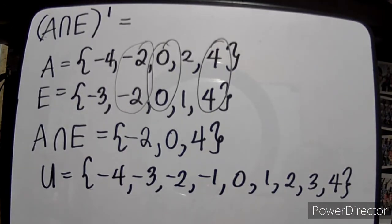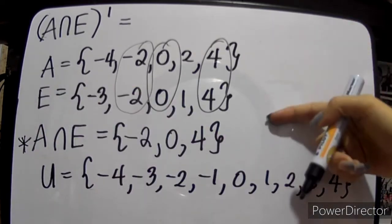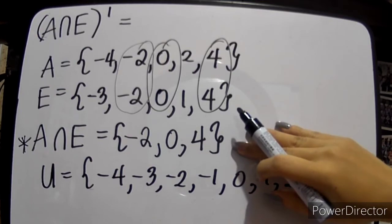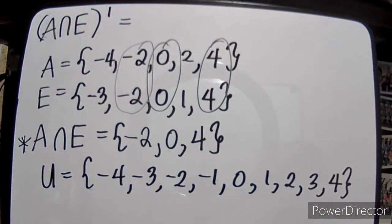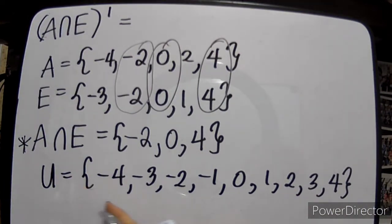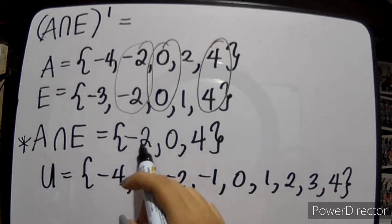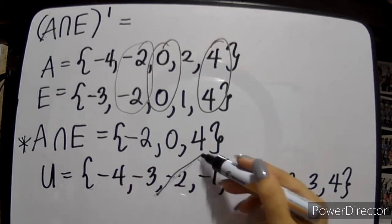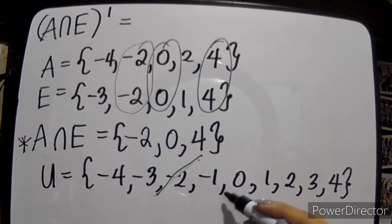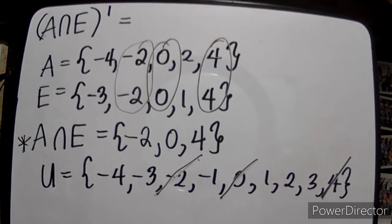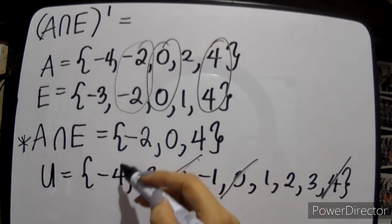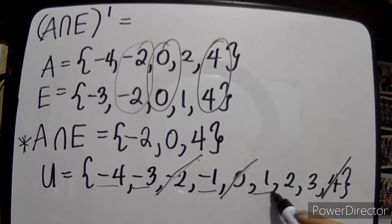Now we get the complement of that result. We remove negative 2, 0, and 4 from the universal set. What remains is {negative 4, negative 3, negative 1, 1, 2, 3}.